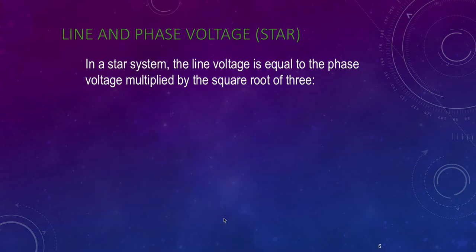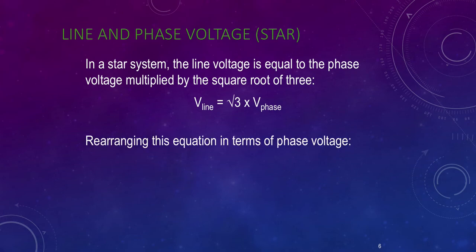So in a star system, the line voltage is the phase voltage multiplied by root three. So if we're rearranging the equation, we can say that the volts phase is equal to the volts line divided by root three.